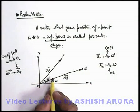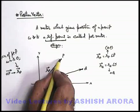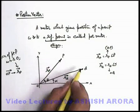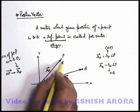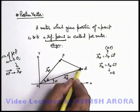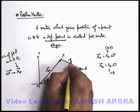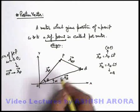We can also define position vector of point Q with respect to point P. Say if we want to denote the position of Q with respect to P, this is given by this vector. This is written as position vector of Q with respect to P, it is defined as r_QP.